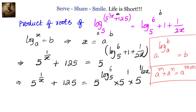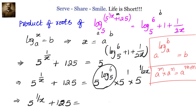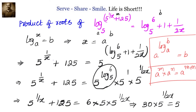Now let us simplify. We get 5 to the power of (1/x + 125) equals 6 times 5 times 5 to the power of 1/2x. Since 5 to the power of log₅6 equals 6, and 5 to the power of 1 equals 5, the right-hand side simplifies to 30 times 5 to the power of 1/2x.